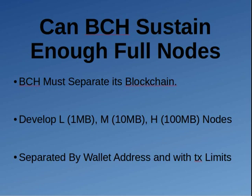They're just not validating all of them — but why do they need to validate all of them? They just need to help with some. So with Bitcoin Cash, can it sustain enough full nodes? Yes, it's very easy. It just separates the blockchain into parts and runs these parts parallel to each other — they're separate, but they are all working on the same blockchain.